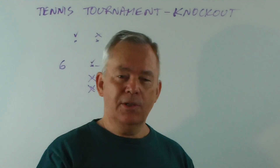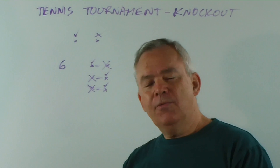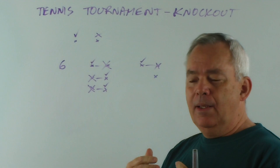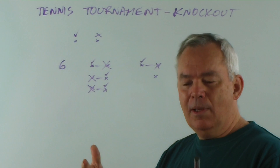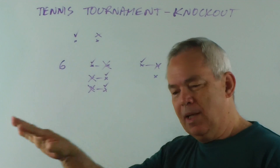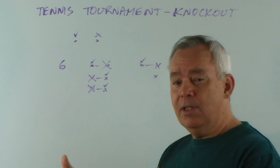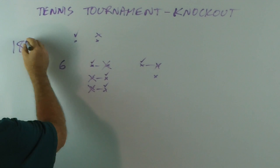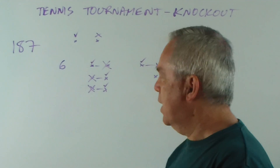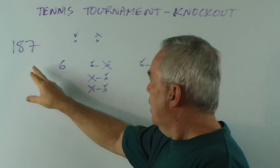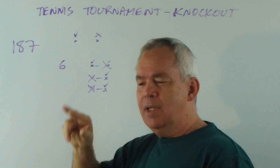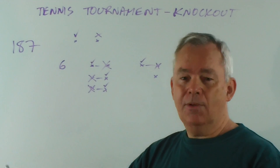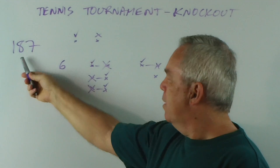Now let me describe the situation and the puzzle. Imagine you've gone to university — I say this because we want lots of people — and you've joined a tennis club. You decide to popularise the club by having a public knockout competition. You contact local businesses, some provide prizes, you advertise, and to your amazement — you might have been expecting 20, 30, 40 people — but let's imagine you've got 187 people. The question is: how many tennis matches do you need to organise before you have one winner?